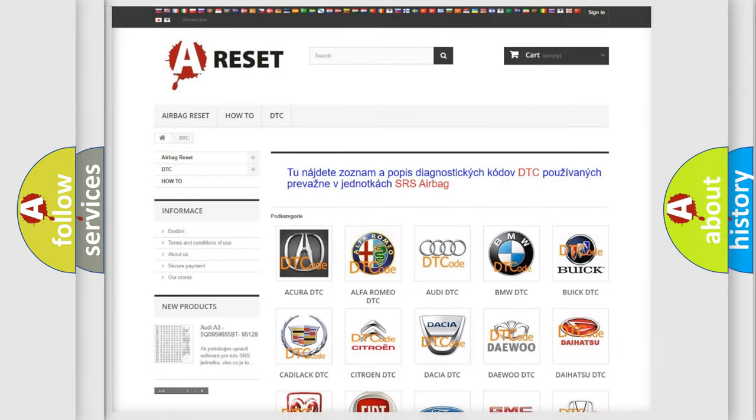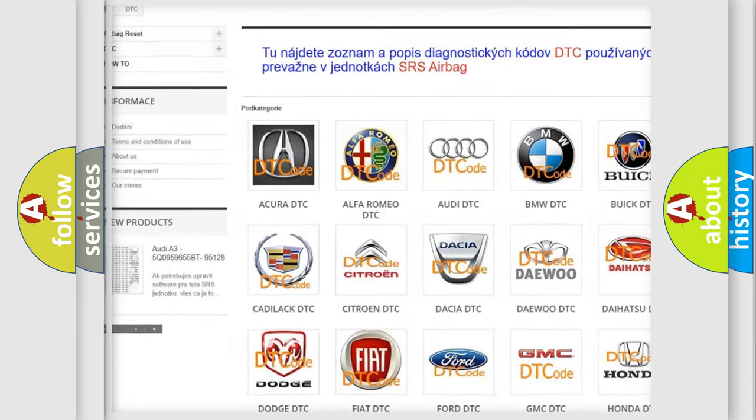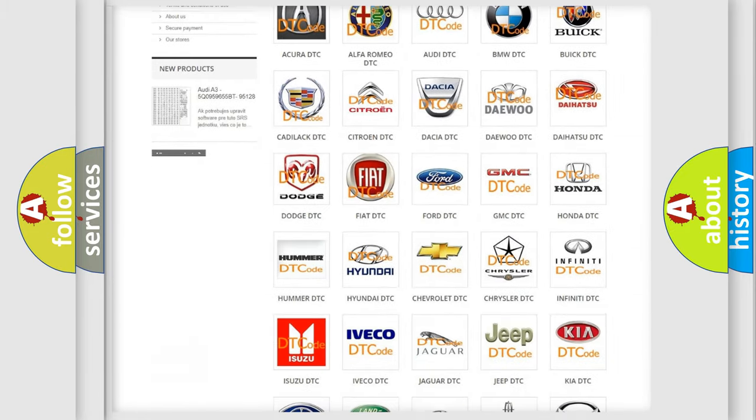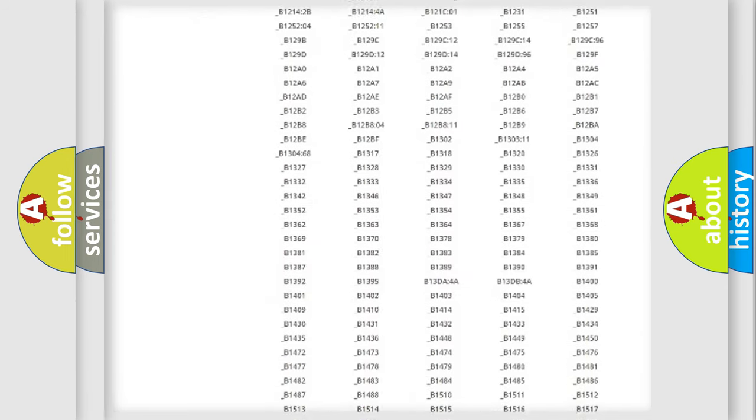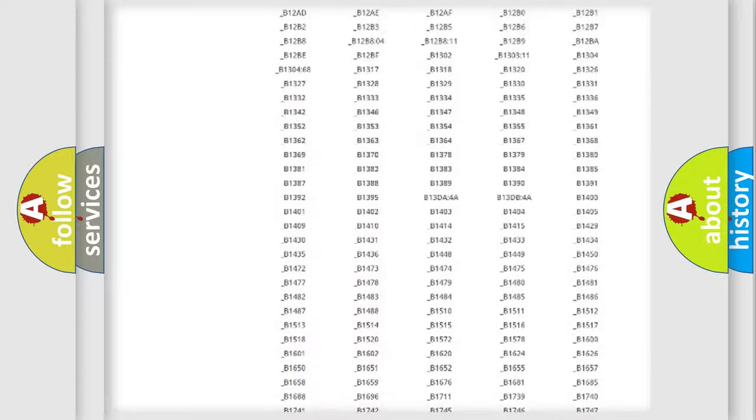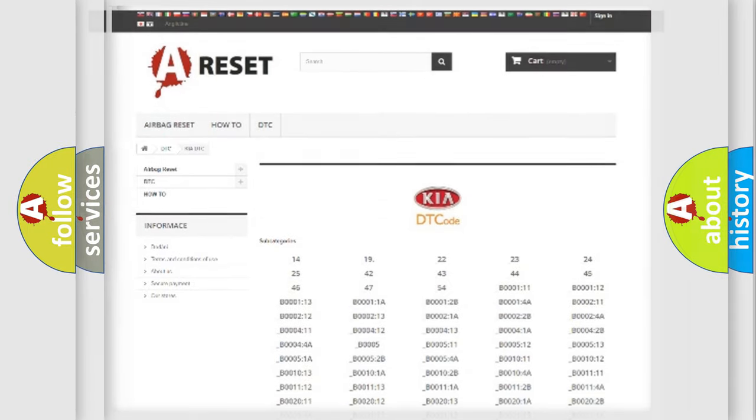Our website airbagreset.sk produces useful videos for you. You do not have to go through the OBD2 protocol anymore to know how to troubleshoot any car breakdown. You will find all the diagnostic codes that can be diagnosed in KIA vehicles, and many other useful things.